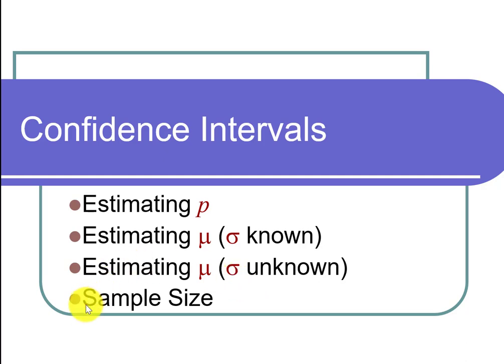The last thing we'll do for each of these is look at sample size. A very important piece of planning a study is deciding how many people you must survey or how much data you must collect in order to have a reliable estimate for the population. We'll have some formulas to show how to find the sample size needed to get a reliable estimate.